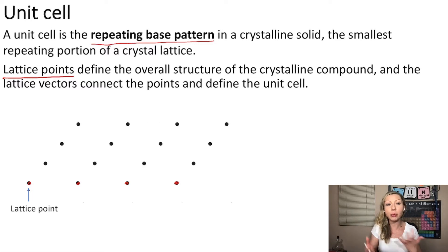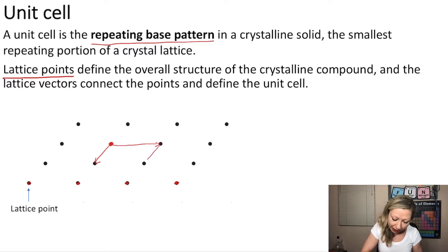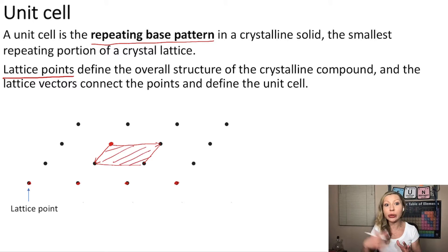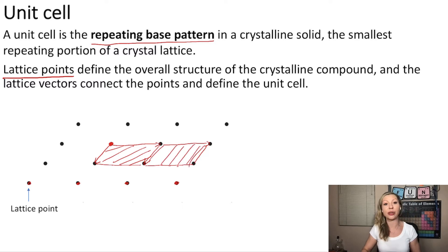So where do I put a lattice vector? I can choose this lattice point, connect it with a lattice vector to this one, and use another lattice vector here, repeat it, and this is my unit cell. And you can see that I can do this over and over again, no matter which direction I go in this crystalline two-dimensional structure.